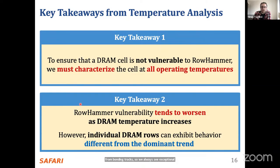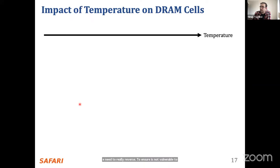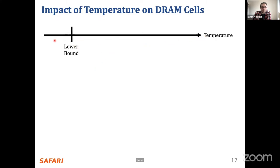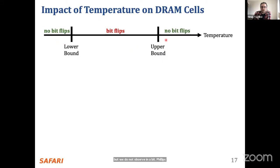Let's talk about the vulnerable temperature range. On this line, temperature increases as you go to the right. We find a lower bound and an upper bound of temperature where we observe bit flips in a DRAM cell — in between these two bounds. But we do not observe any bit flips at lower or higher temperatures outside of this range. We call this range the vulnerable temperature range.